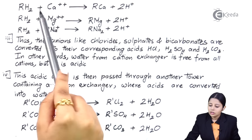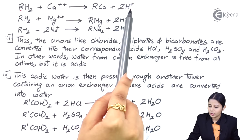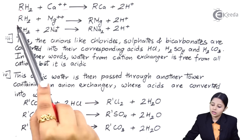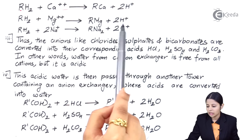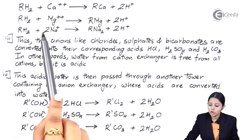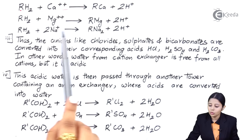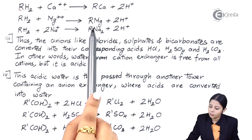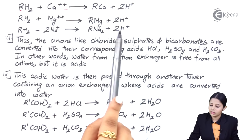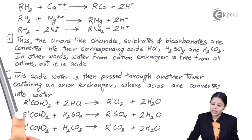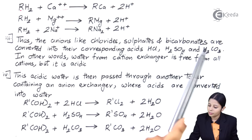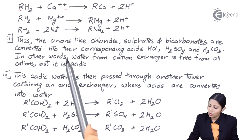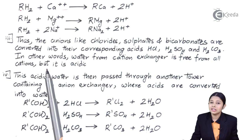The cation exchange reactions are: RH₂ + Ca²⁺ → RCa + 2H⁺; RH₂ + Mg²⁺ → RMg + 2H⁺; RH₂ + 2Na⁺ → RNa₂ + 2H⁺. So instead of Ca²⁺ or Mg²⁺ or Na⁺ ions, we now have only H⁺ ions. Thus anions like chlorides, sulfates, and bicarbonates are converted into their corresponding acids — HCl, H₂SO₄, and H₂CO₃. In other words, water from the cation exchanger is free from all cations but is still acidic.